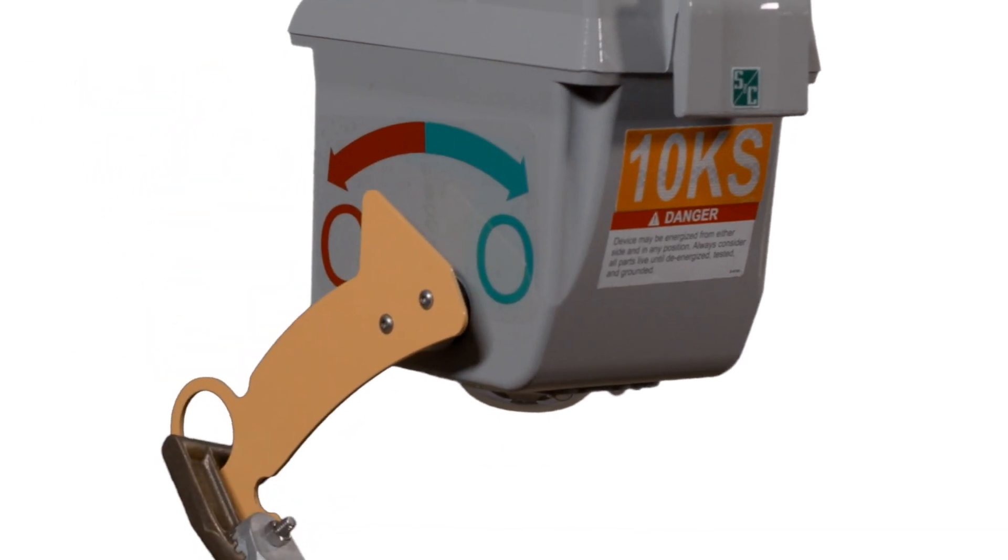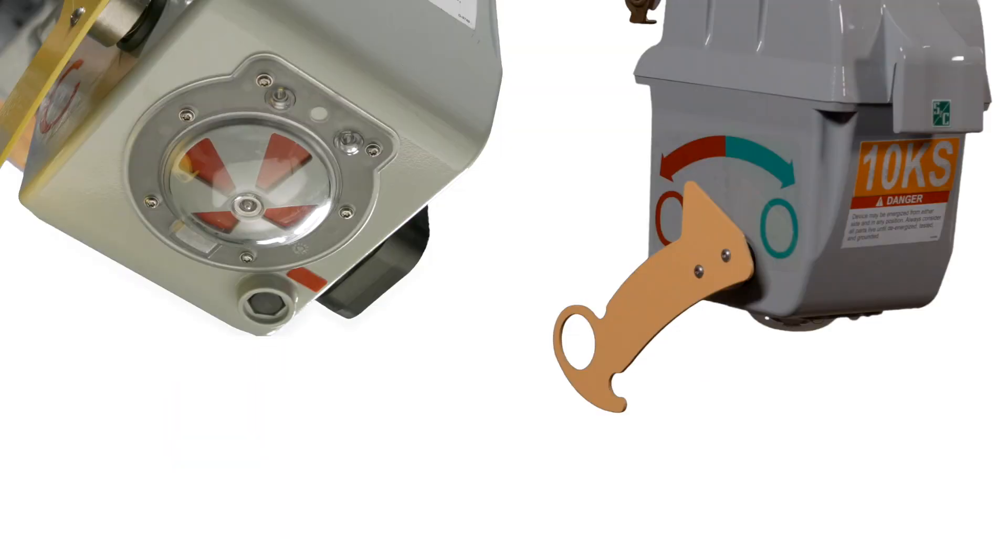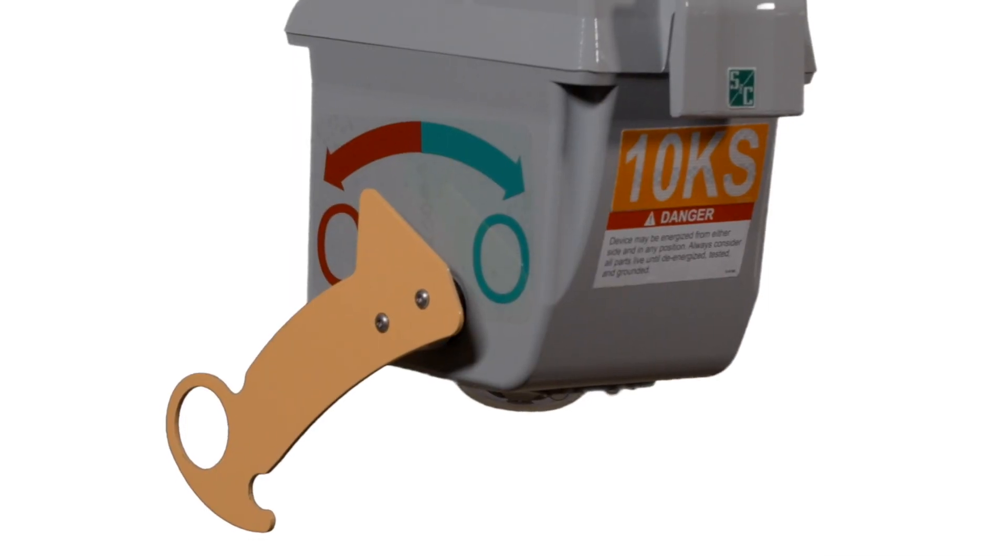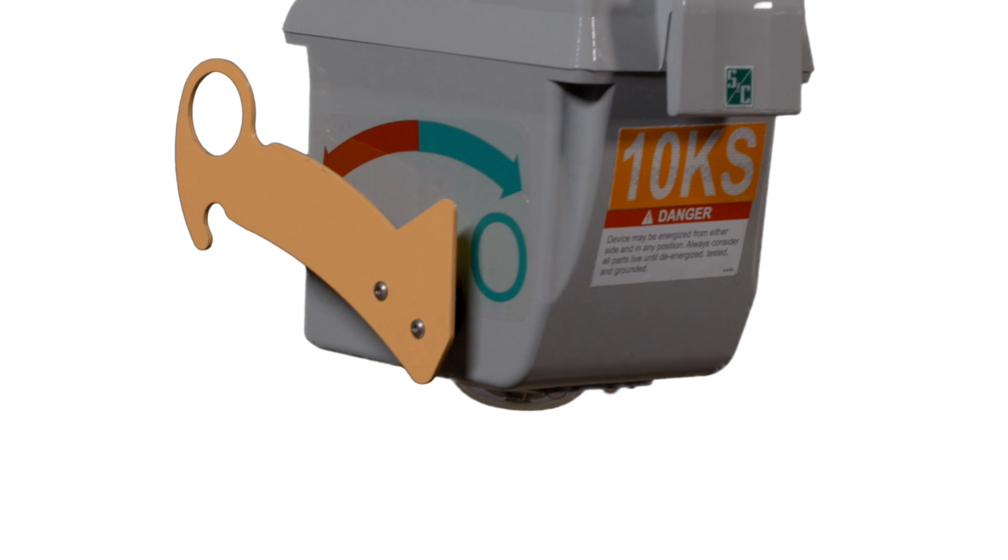In the event the VacuFuse self-resetting interrupter is closed into fault current, the interrupter will immediately trip open. This will put the open-close lever out of sequence with the position indicator. The lever will indicate closed while the position indicator shows open. The lever can easily be put back into sequence by operating it into the open position by pushing up on the indent in the open-close lever.